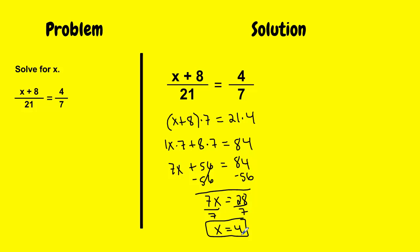So how do I know this is the correct solution? I just substitute the value 4 in place of my variable x. So I would get 4 plus 8 over 21 equals 4 over 7. And then, if I simplify my numerator here, 4 plus 8 is 12 over 21 equals 4 over 7. And if I check my work by multiplying 12 times 7 and 21 times 4, I can see 7 times 12 is 84. And 21 times 4 is also 84. Since that checks out to be true, then I know x equals 4 is the correct solution to this proportion.